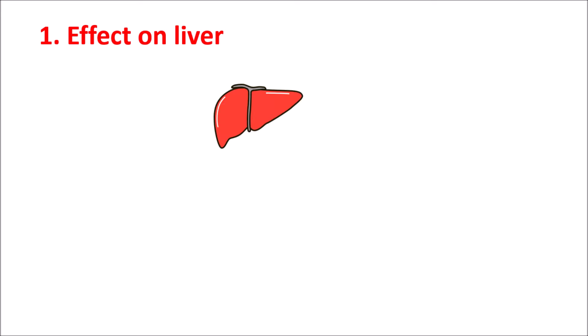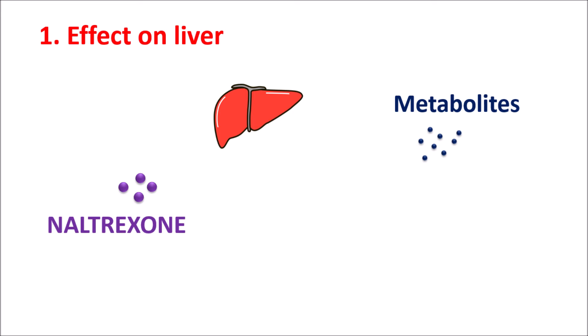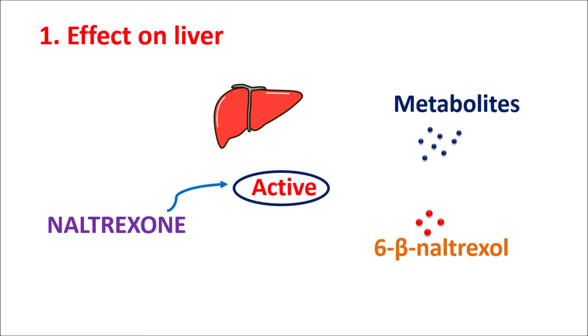Many medications are metabolized within the liver. Similarly, Naltrexone tablets can also be metabolized within the liver. Due to its metabolism in the liver, they can be released as metabolites, which may be either active or inactive. One of its active metabolites is 6-beta Naltrexone. So both Naltrexone and its metabolite 6-beta Naltrexone are active. Under normal conditions, when using at regular doses such as 50 mg of Naltrexone, both of these components are not producing any significant effect on the liver.